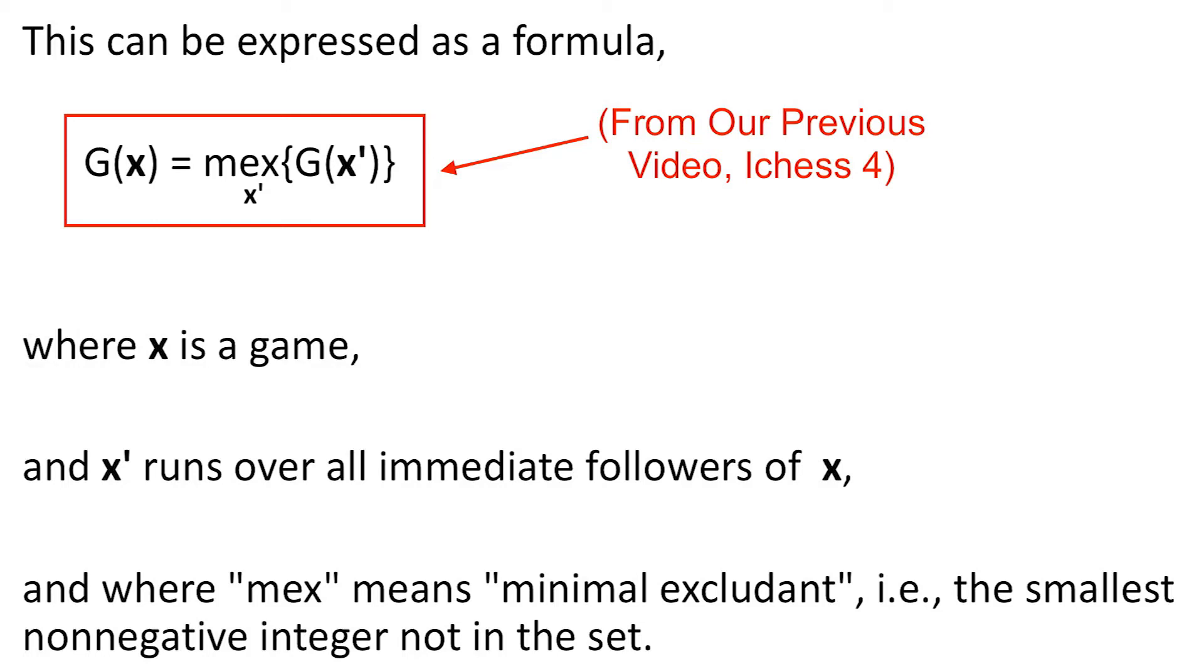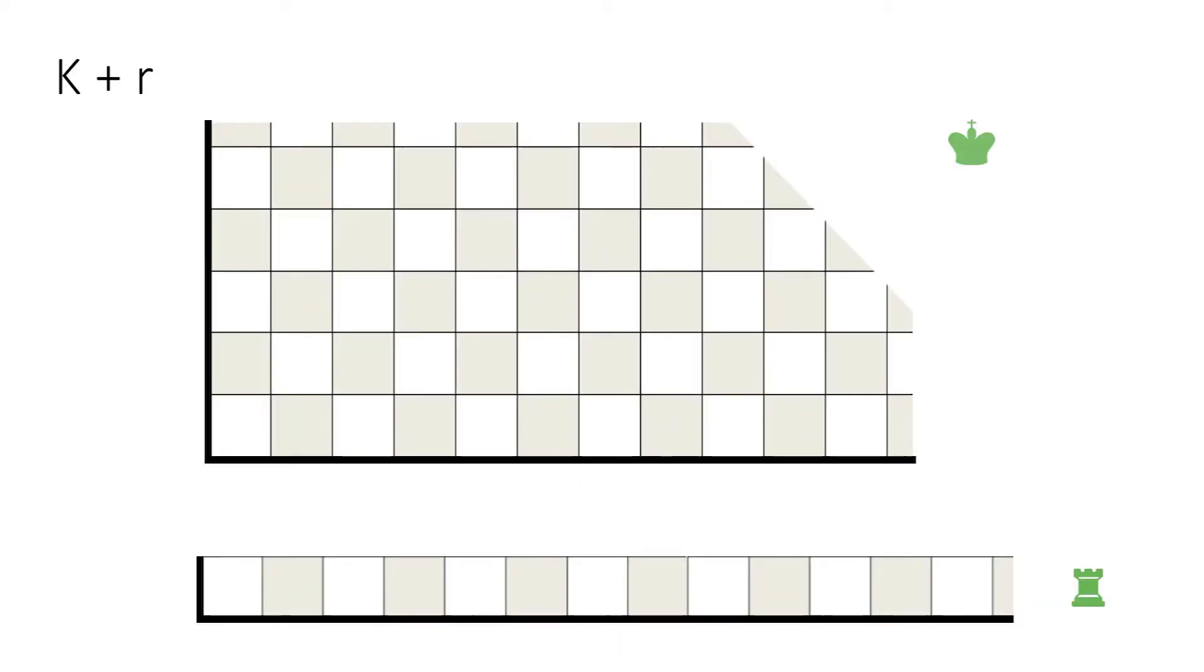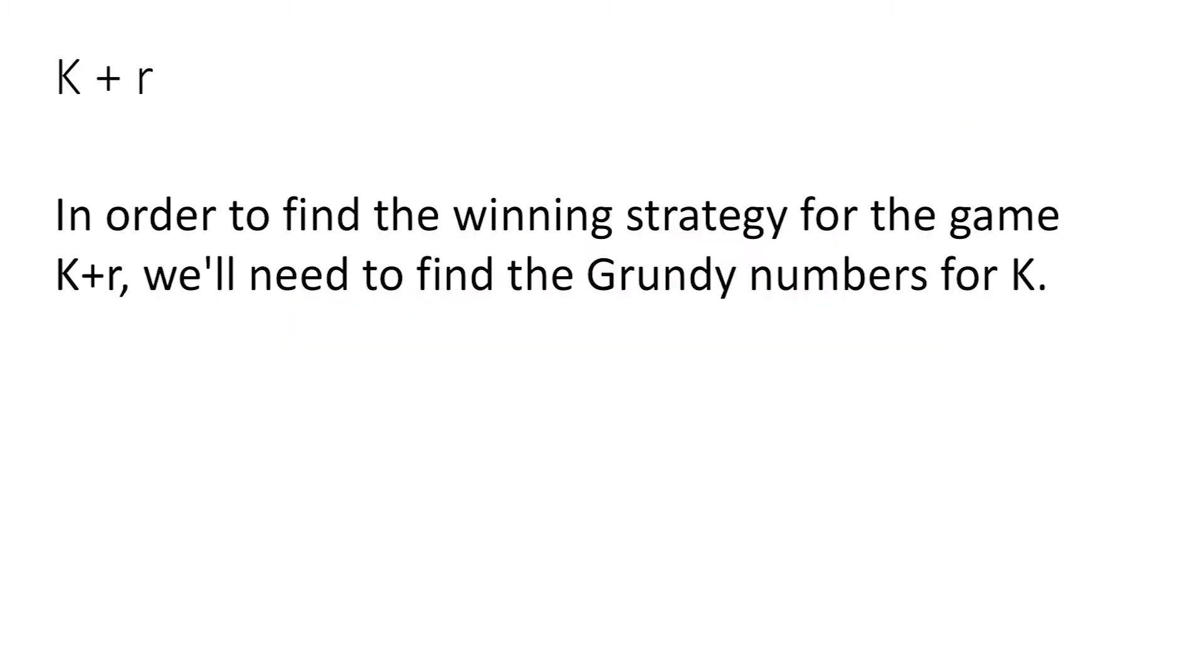Now let's use this formula to solve the game of king plus baby rook. To that end, we must find the Grundy numbers for the king.